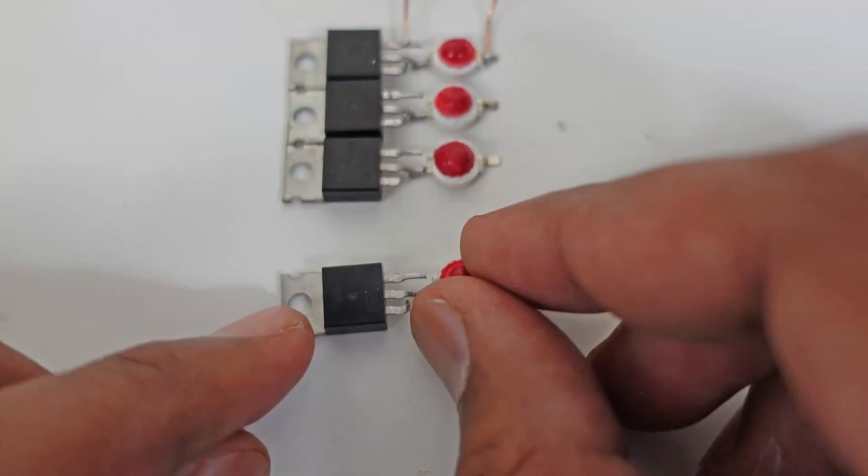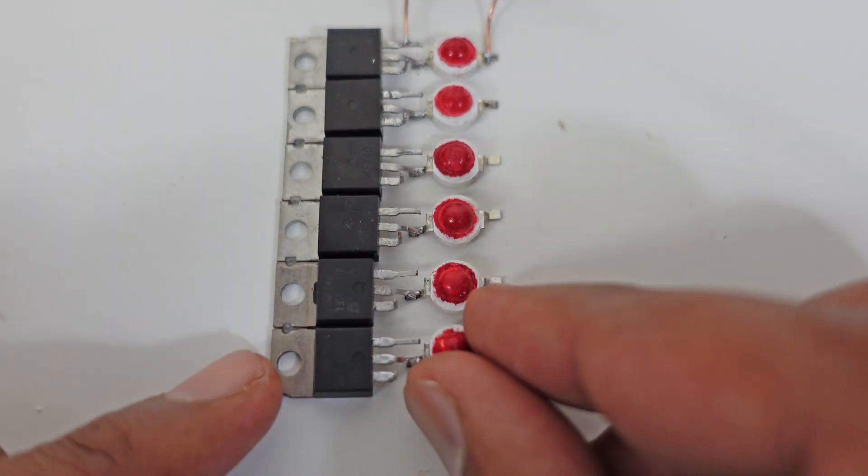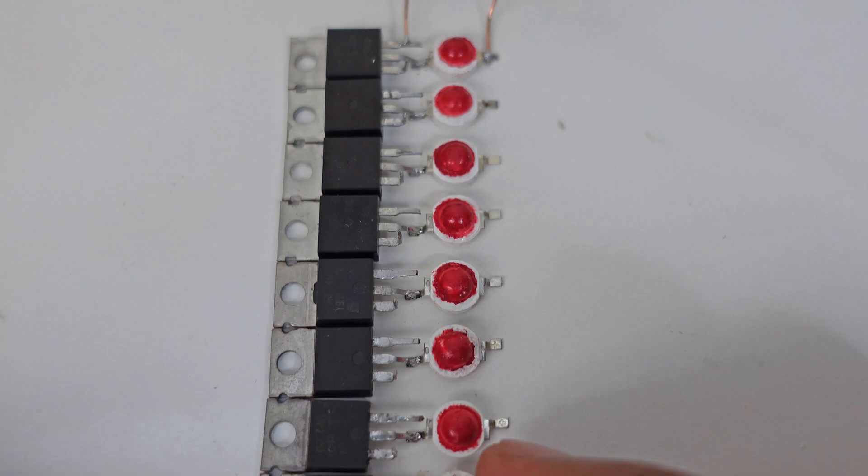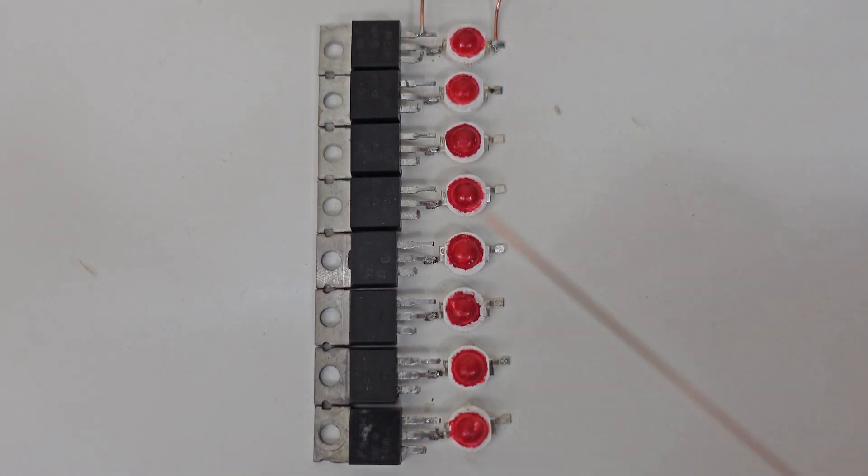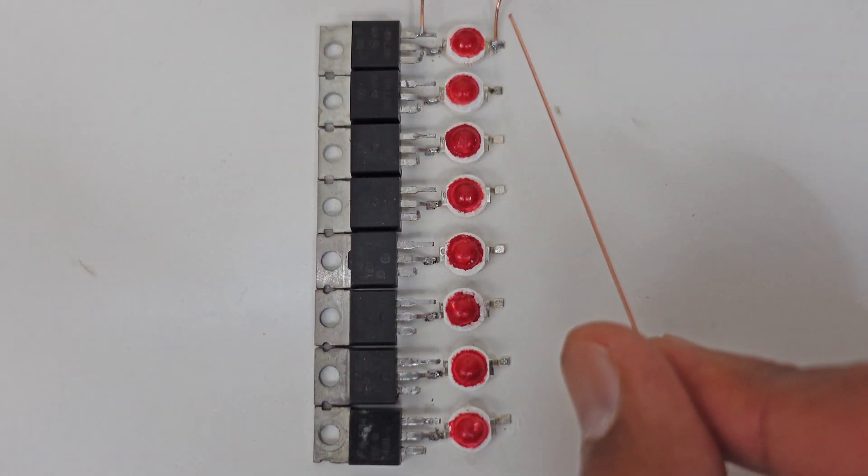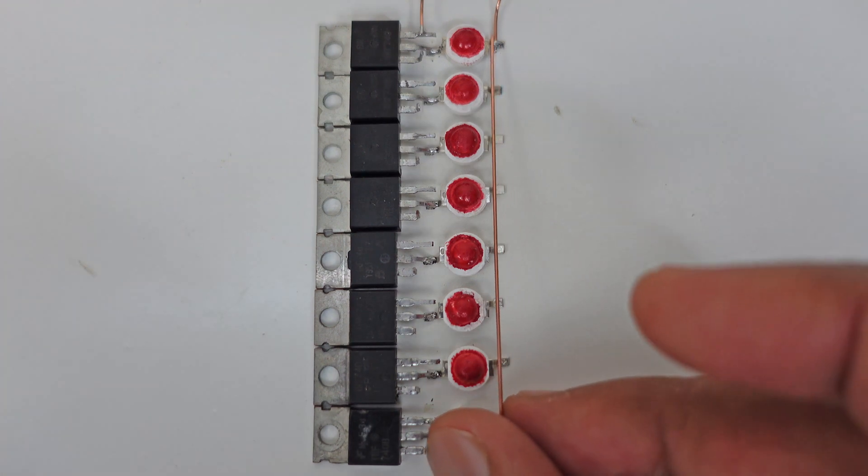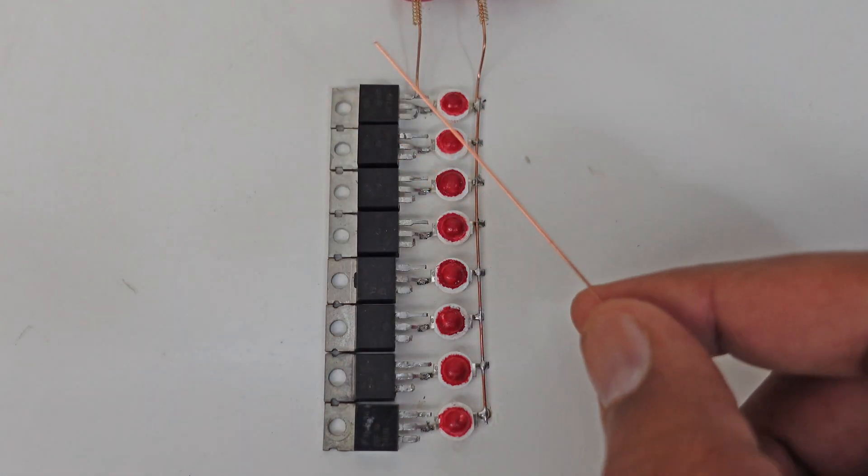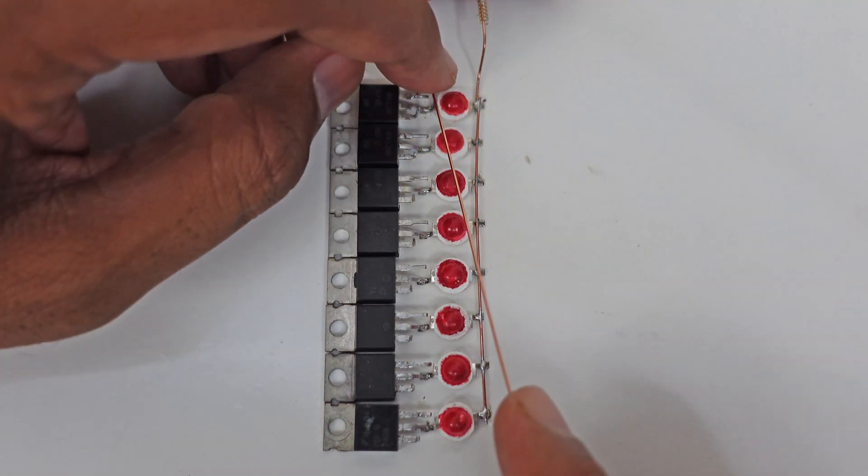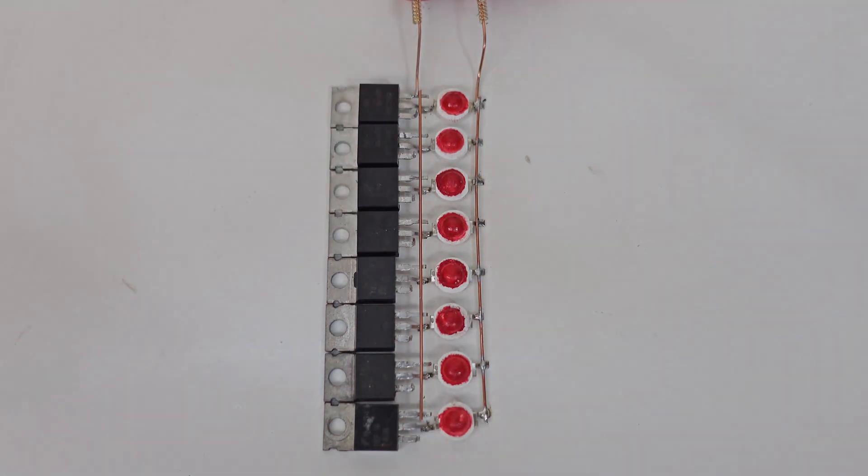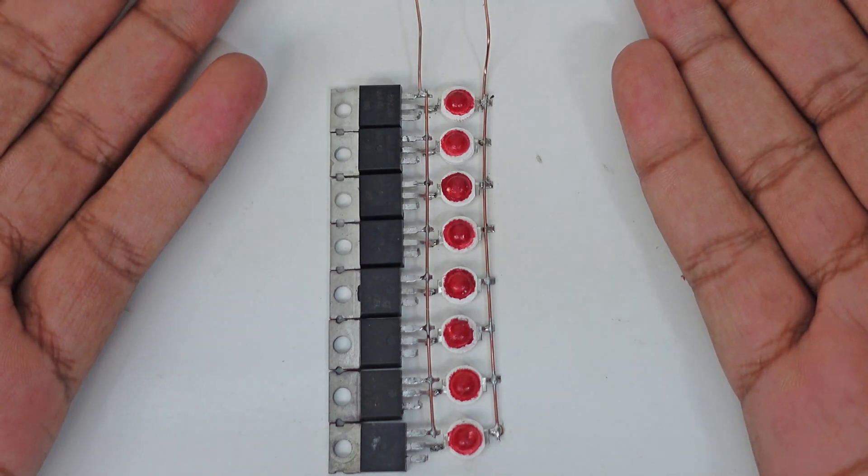Similarly we increase the number of MOSFETs to eight: three, four, five, six, seven and eight. Eight bits equals one byte. Now we connect all the LED lights with the battery from the positive side and connect all the MOSFETs to the battery from the negative side as well. Our one byte memory is ready to store data.